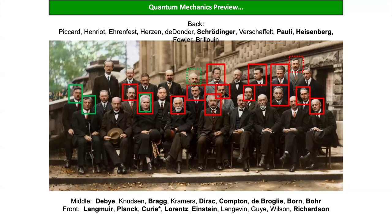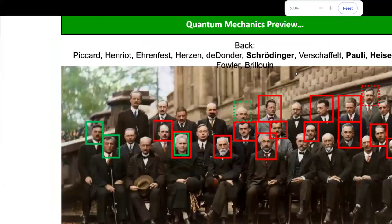I've never seen a picture of Heisenberg where he didn't look just kind of creepy — he's always hunched forward, kind of peering around a corner. That's always his facial expression in every picture I've ever seen of him. Let me zoom in on him... right there. That's always his look.